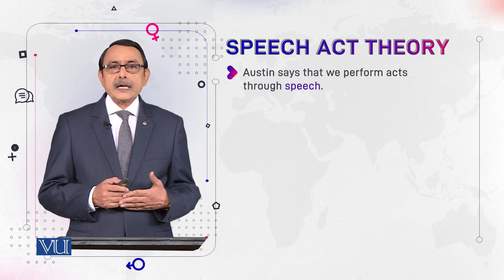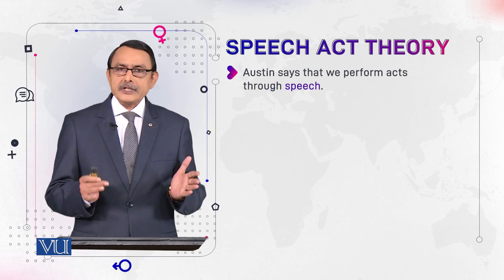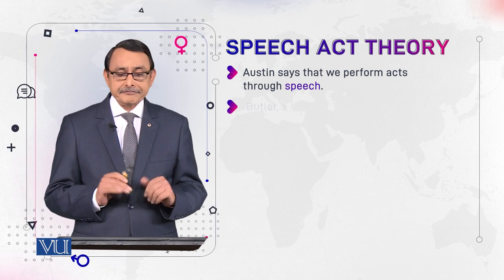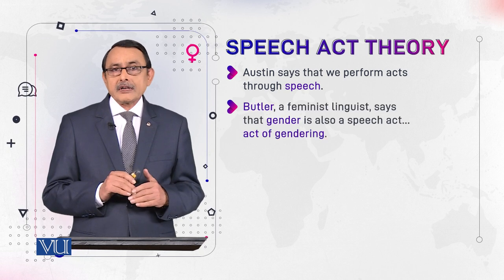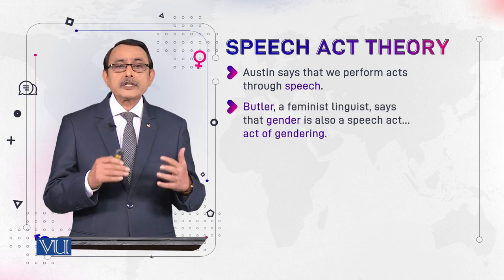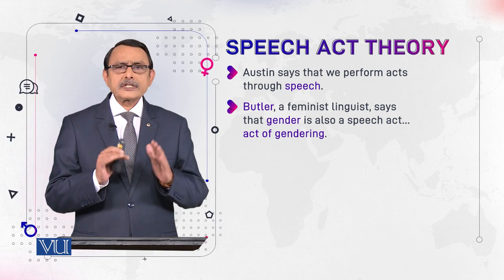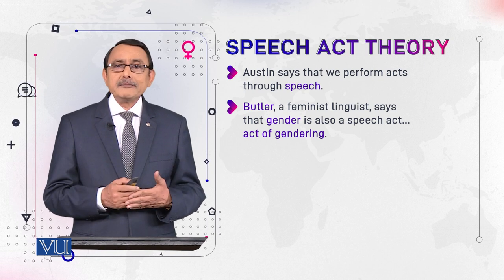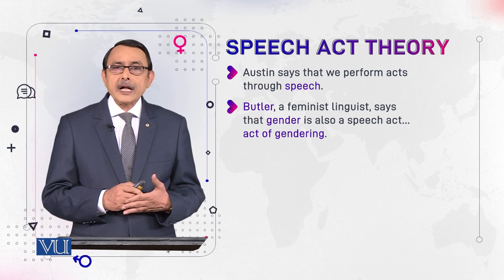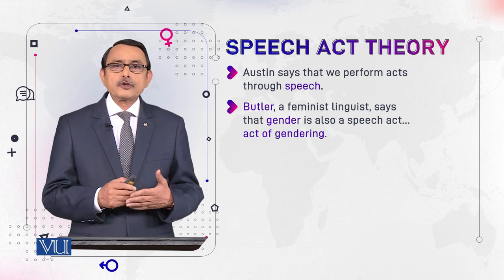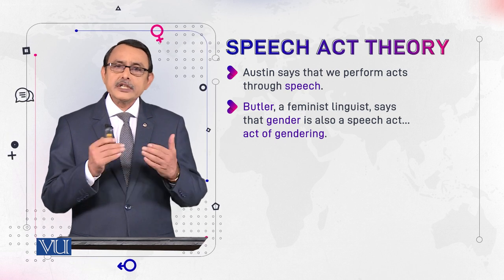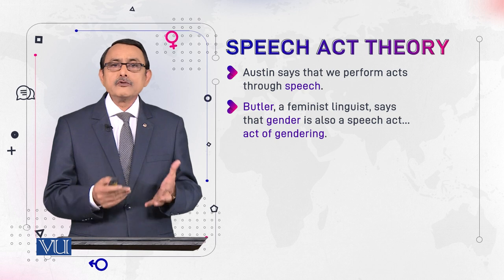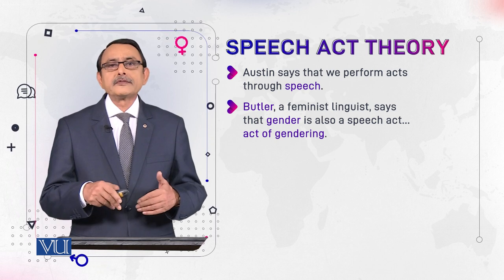Austin says that we perform acts through speech — so far we can conclude this. Now, Austin was from philosophy and this was his opinion. Judith Butler, a feminist linguist, borrowed this theory to show the relationship of language and gender in the field of language and gender studies. It was she who introduced it into our field of study.